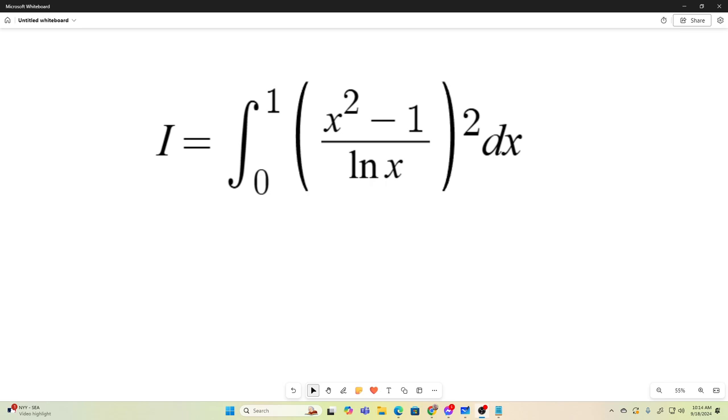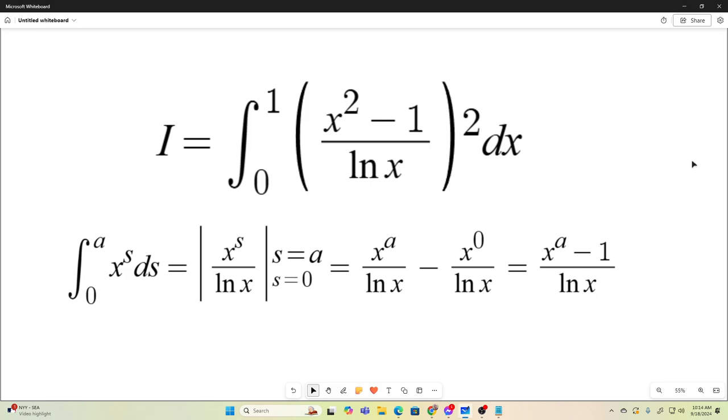So this is the first thing we need to recognize that this is true. If we take the integral from 0 to a of x to the s ds, we get x to the a minus 1 over natural log x. That's the process there laid out for you. Just take the antiderivative, evaluate it at the bounds, and combine them. And you get x to the a minus 1 over natural log x.